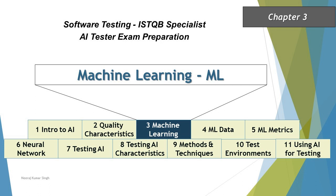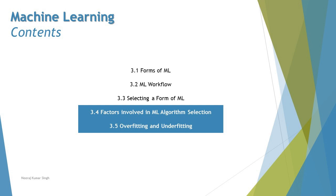Hello friends, greetings for the day, and welcome back to another tutorial on our ISTQB AI Tester certification. We are in chapter 3 talking about machine learning concepts, and we'll be stepping into the next segment of this chapter, which is going to cover the remaining topics: 3.4 - Factors Involved in ML Algorithm Selection, and 3.5 - Overfitting and Underfitting.